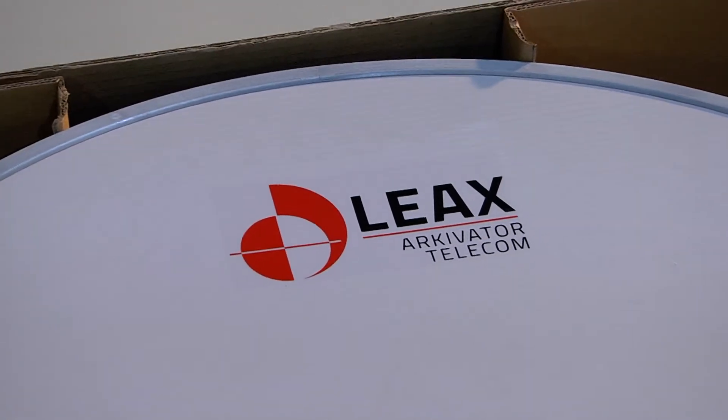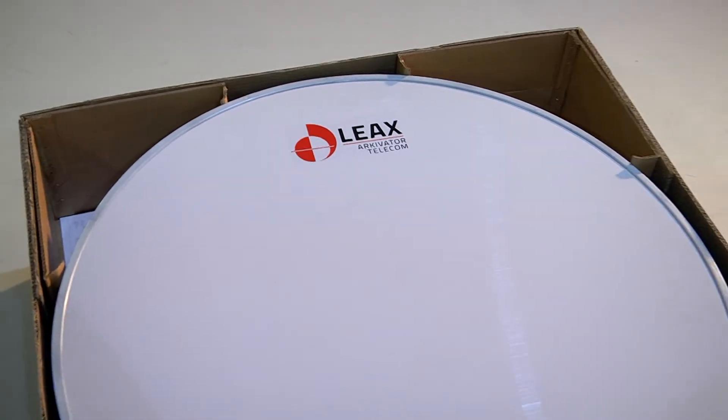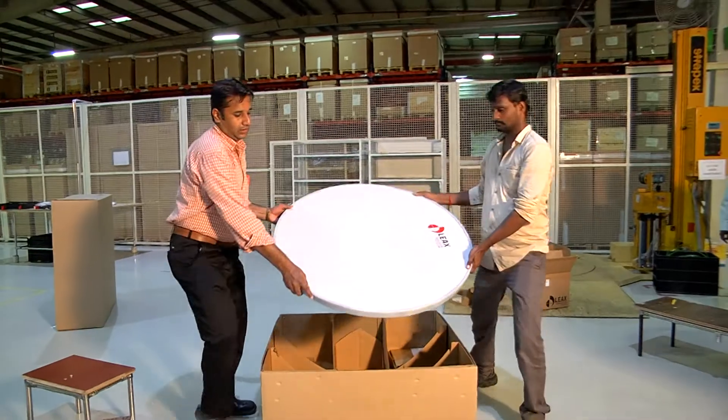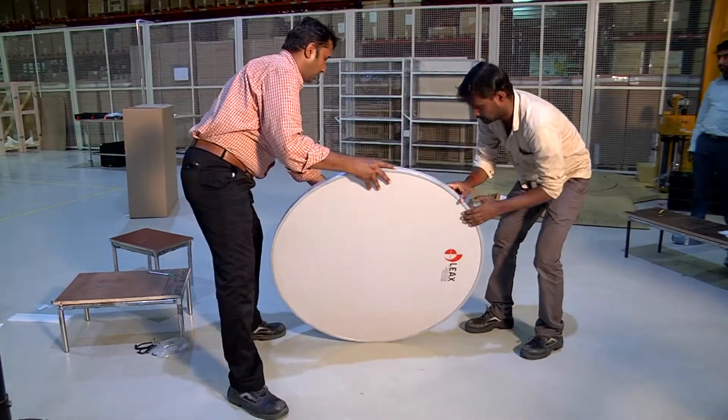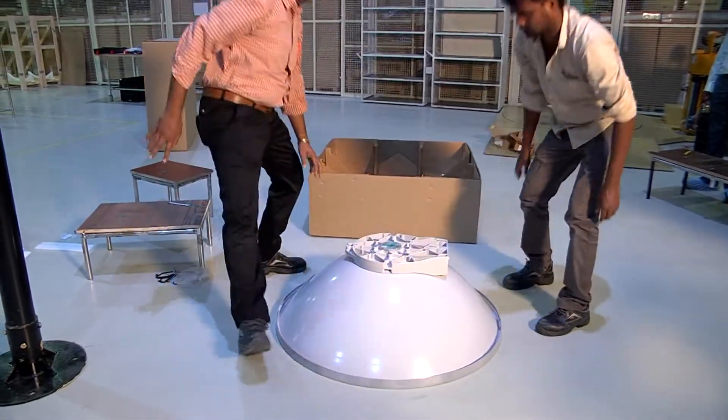This is an installation instruction video for the 0.9 meter antenna. The antenna must first be taken out of its packing and placed on a flat clean surface with the reflector facing downward as depicted.